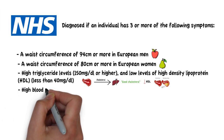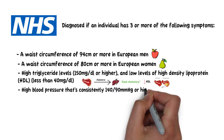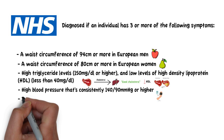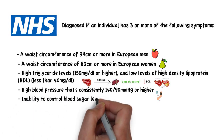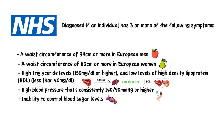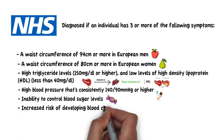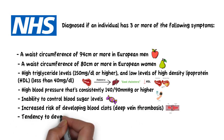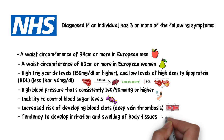A high blood pressure that is constantly 140 by 90 millimeters of mercury or higher. An inability to control blood sugar levels, so some sort of insulin resistance. An increased risk of developing blood clots, such as deep vein thrombosis, and a tendency to develop irritation and swelling of body tissue.